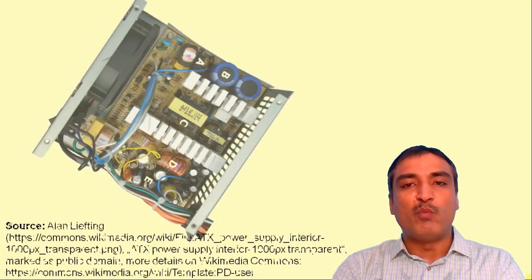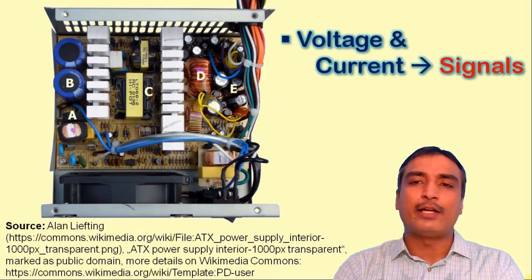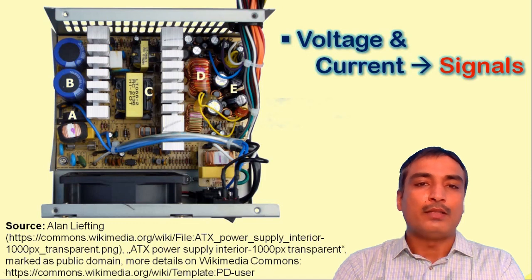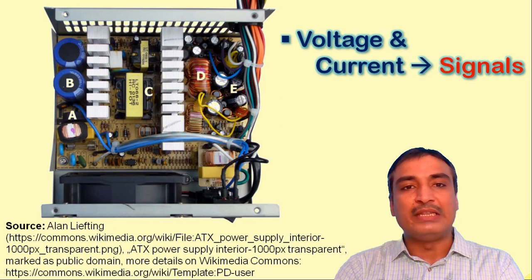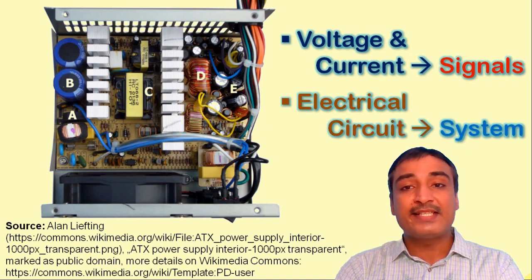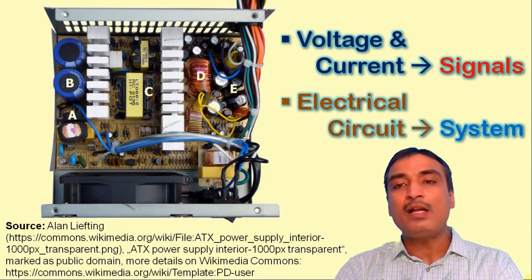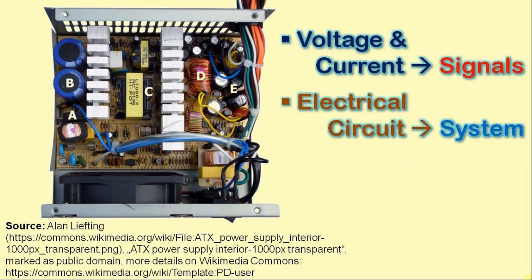For example, you may look at the voltage and current in an electrical circuit. The voltage and current in an electrical circuit are the functions of time, so these are examples of signals. On the other hand, the electrical circuit itself is an example of a system, which in this case responds to the input voltage and current.